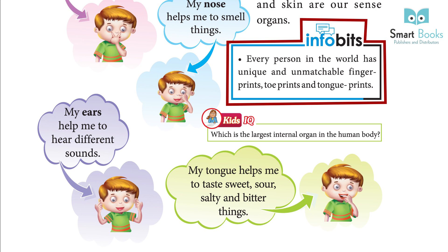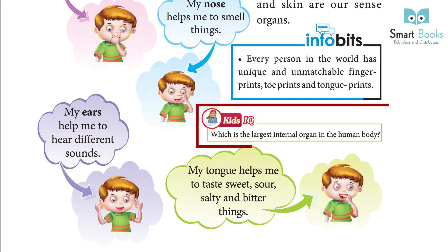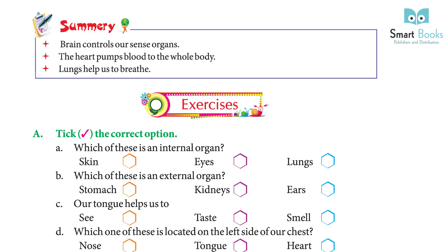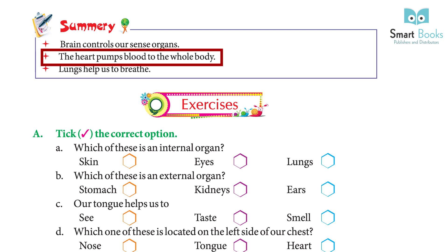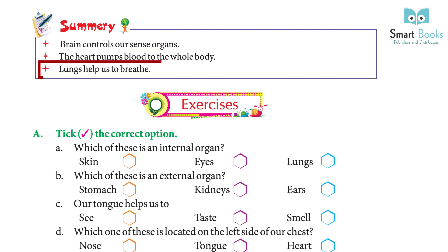Info bits: Every person in the world has unique and unmatchable fingerprints, toe prints, and tongue prints. Kid's IQ: Which is the largest internal organ in the human body? Summary: The brain controls our sense organs. The heart pumps blood to the whole body. Lungs help us to breathe.